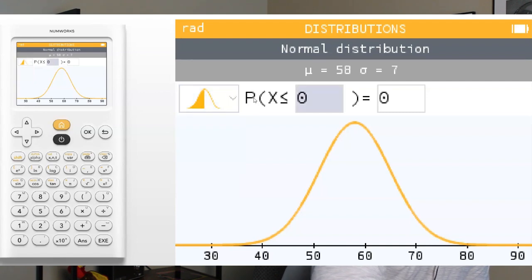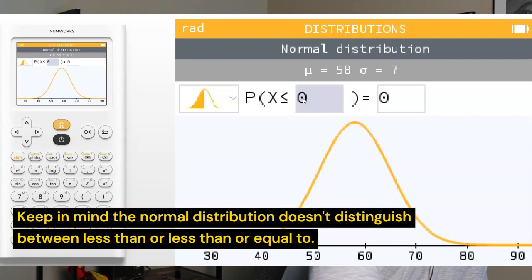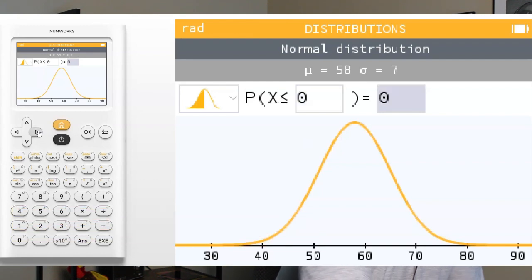Then over here, we have the probability or the proportion that a particular value X is less than or equal to, well, you type in the value that the question asks, and then over here, it's going to spit out the proportion or the probability of data that is below that particular value. So let's do a quick question here.